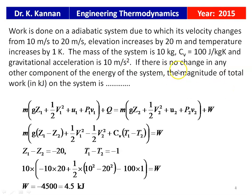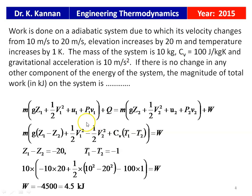Rearranging: W = M[g(Z1−Z2) + ½(V1²−V2²) + CV(T1−T2)]. Z2−Z1 = +20 m, so Z1−Z2 = −20. T2−T1 = +1 K, so T1−T2 = −1 K. Substituting: W = 10[10×(−20) + ½(100−400) + 100×(−1)] = 10[−200 − 150 − 100] = −4500 J = −4.5 kJ. The magnitude of work done on the system is 4.5 kilojoules.